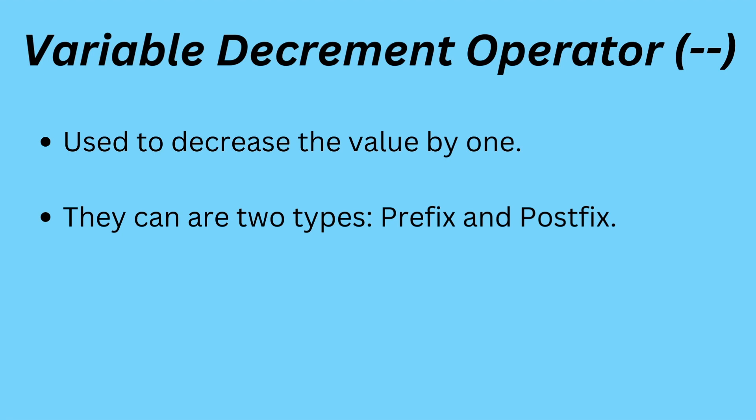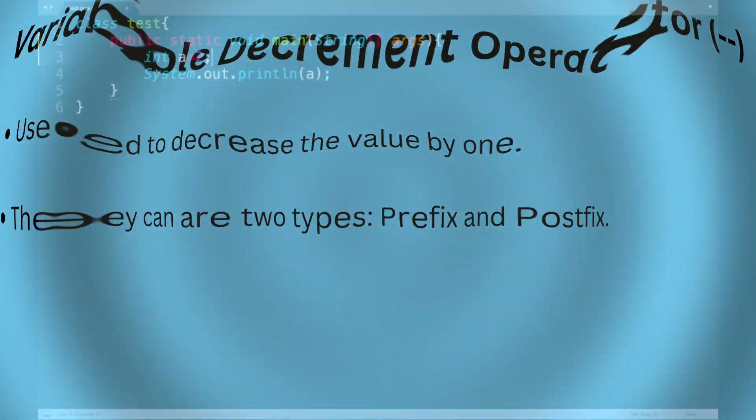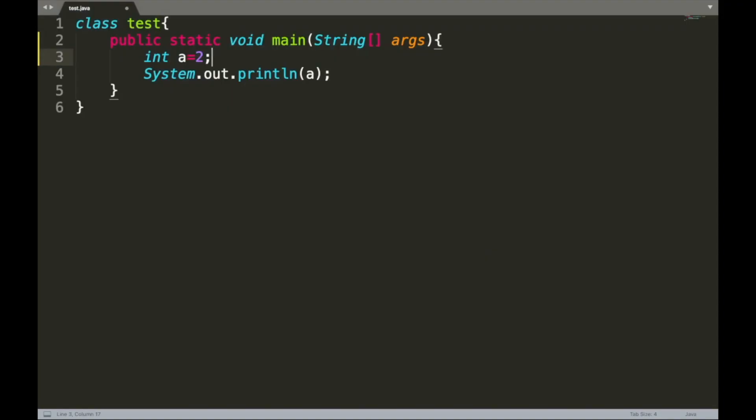Now let us talk about the variable decrement operator. It is used to decrement the value of a variable by one, and it also comes in two types: the prefix decrement operator and the postfix decrement operator.